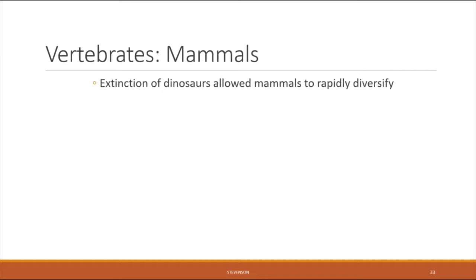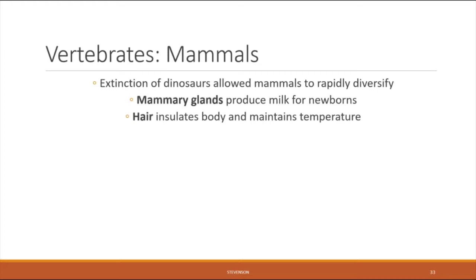Our final and perhaps most beloved group is the mammals. It is thought that the extinction of the dinosaurs allowed mammals to rapidly diversify — once largely free of dinosaurs, smaller mammals were able to enter new opportunities, expand their range, and evolve into new areas. Mammals are united by the characteristic of having mammary glands — the namesake of the category — which produce milk for newborns. All mammals also have hair, which provides insulation and maintains core body temperature.